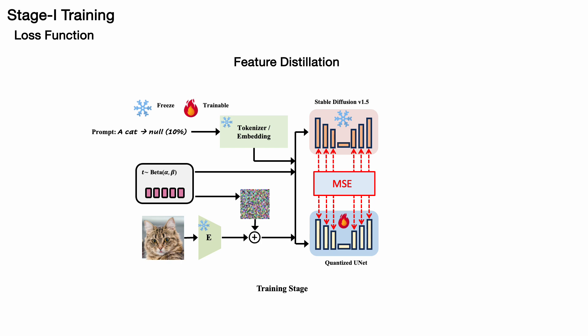To further enhance performance, we employ feature distillation, enabling the quantized model to learn the intermediate features from the pre-trained, full-precision diffusion model. By integrating the two approaches, CFG-aware quantization and feature distillation, we train the weights and scaling factors of our quantized model to minimize quantization error as effectively as possible.